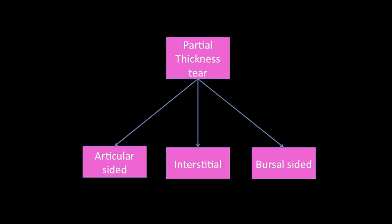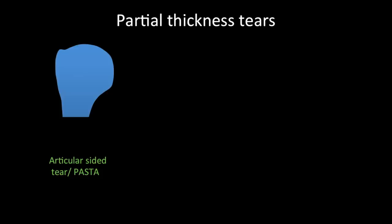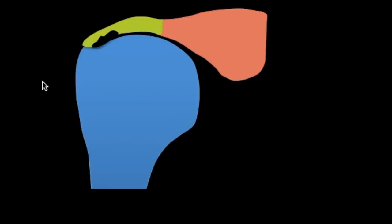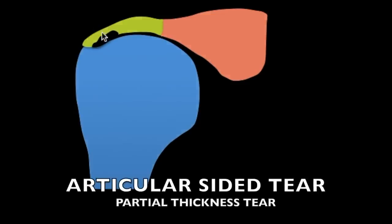Now we will discuss partial thickness tears, which can be articular sided, interstitial, or bursal sided. In an articular sided tear, there is tearing along the articular surface of the tendon while the bursal surface remains intact.